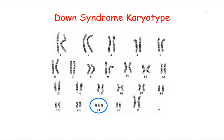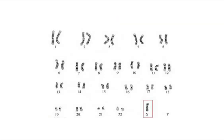This karyotype shows someone with Down syndrome — all chromosomes laid side by side in homologous pairs. They have two X chromosomes so they're female, and the key difference is they have three copies of chromosome 21. This person is therefore a female with Down syndrome. Another condition shown here is Turner syndrome, where instead of XX or XY, the individual has only one X chromosome, giving a genotype of XO.